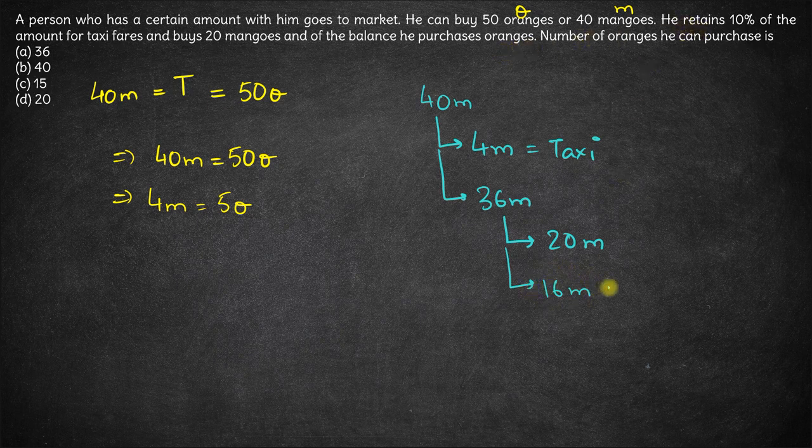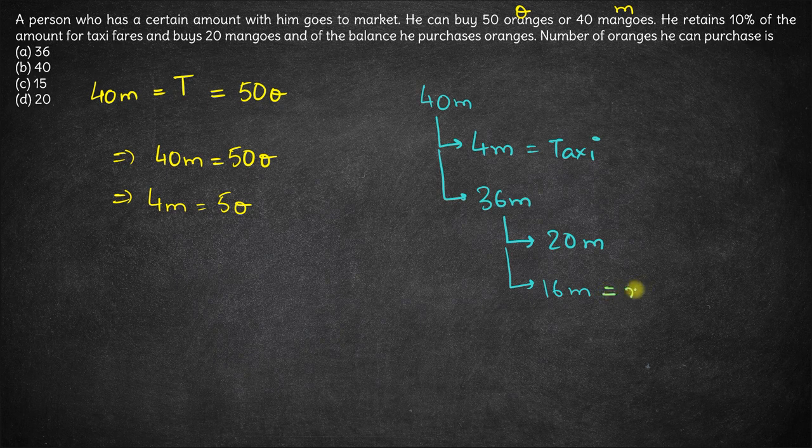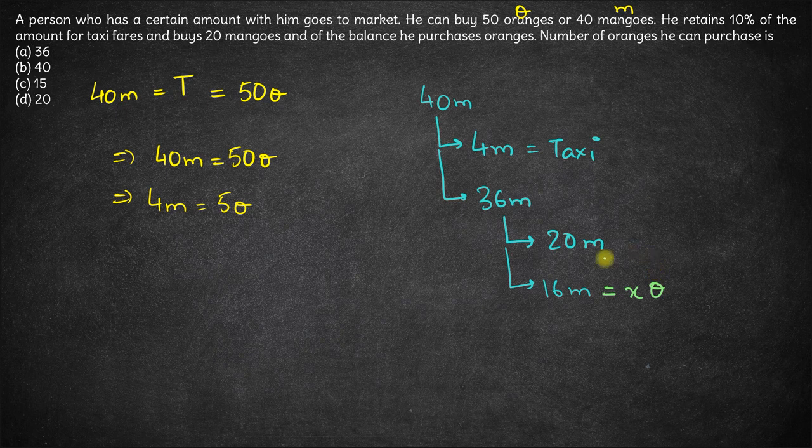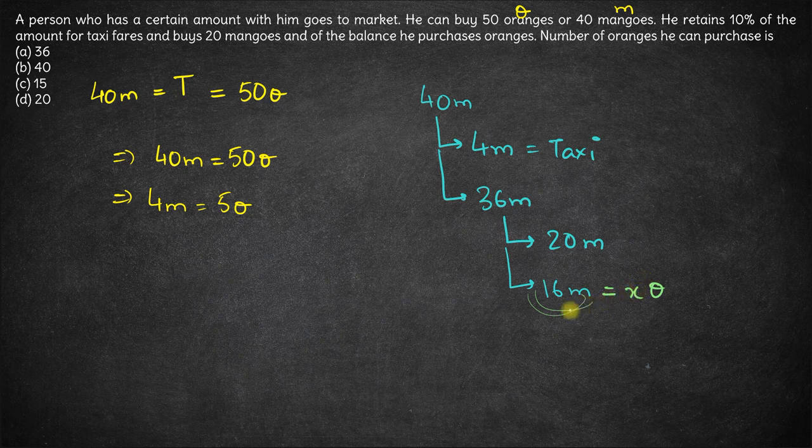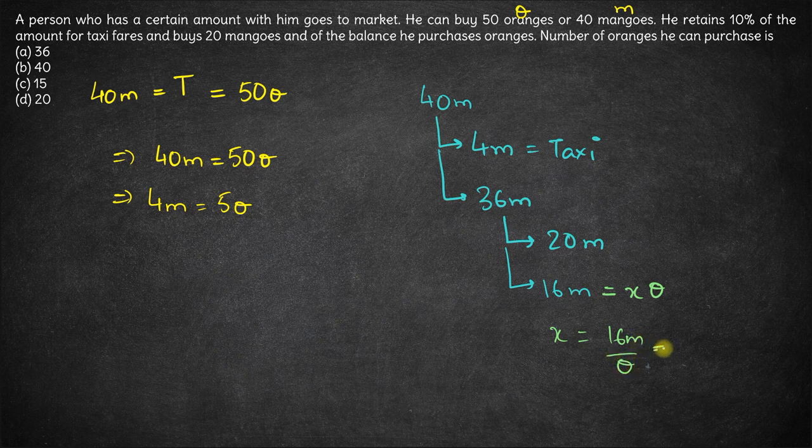Now 16M will equal, let's say, X into O, where O is the price of each orange. This is the amount left with him and this should equal X into O, where X is the number of oranges that he can purchase. So X comes out to be 16M upon O. This is 16 times M upon O.